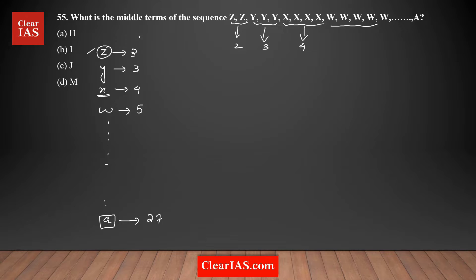To find the middle term, we first need to figure out how many terms there are in the sequence. So I need to add all of them — it's going to be 2 plus 3 plus 4 plus 5, all the way until 27.